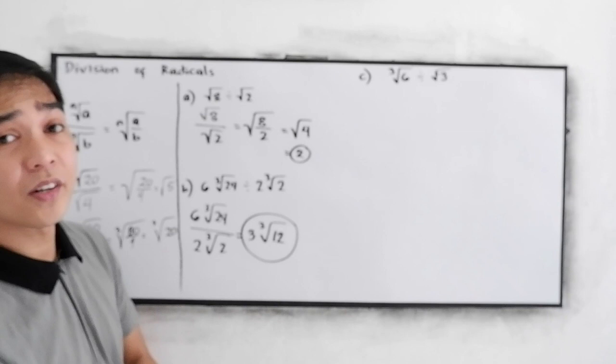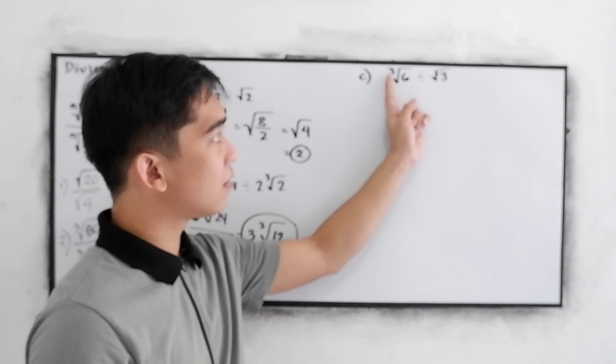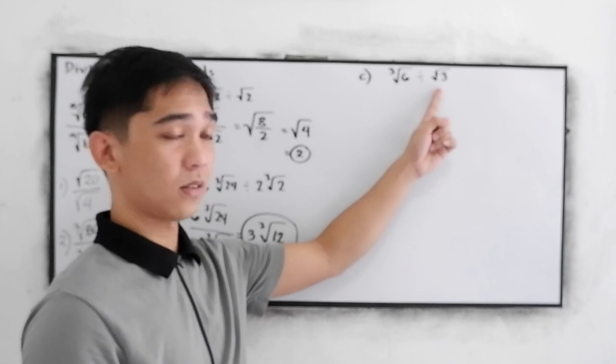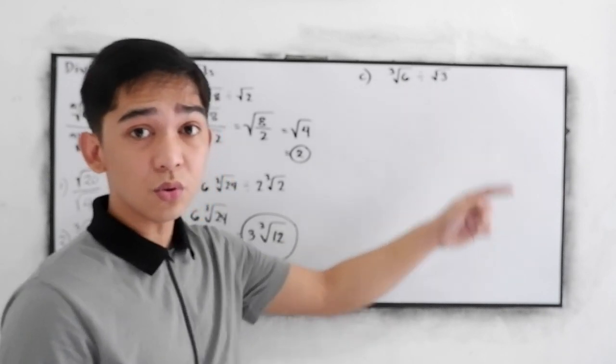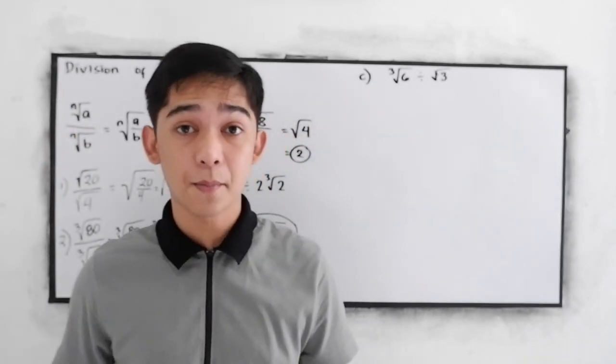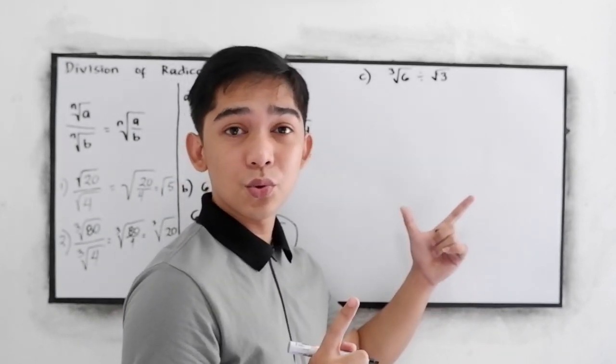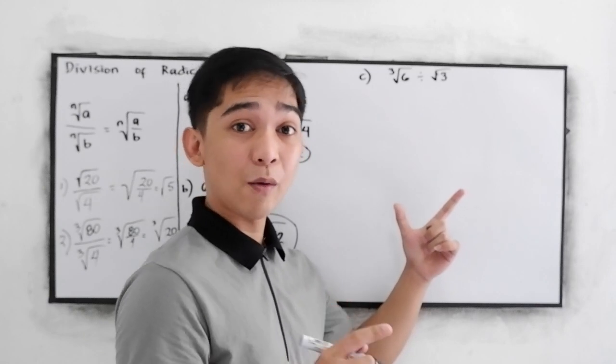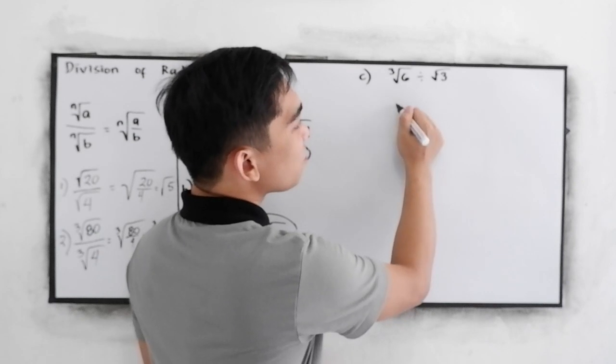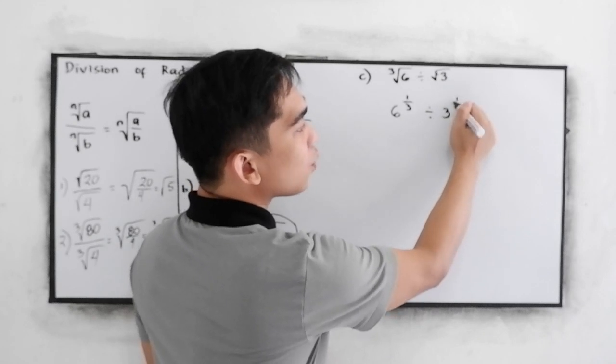Now, in letter C, notice that we have different indices and different radicands. All we need to do to apply our principle is the indices must be the same. First step, let us write into the rational exponent, just like what we did in multiplication. That is equal to 6 raised to 1 third, divided by 3 raised to 1 half.